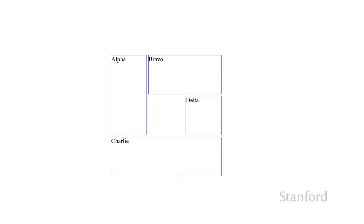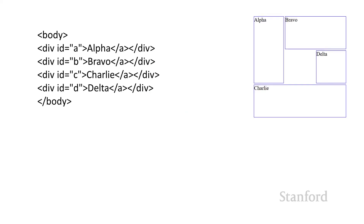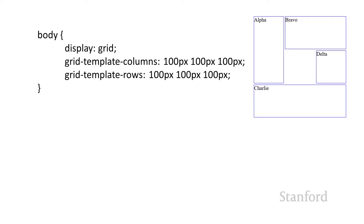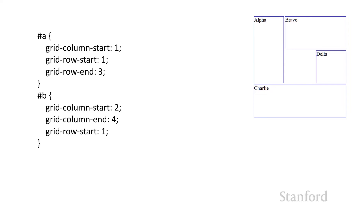For the next example, we need row span and column span. Bravo goes across two columns, Alpha goes across two rows, and Charlie goes across three columns. The approach I'll use is providing both a start and an end. Here's the body — exactly the same as before with four different divs. The body style rule sets up a grid with three columns and three rows, all 100 pixels each. Alpha has ID A and Bravo has ID B.